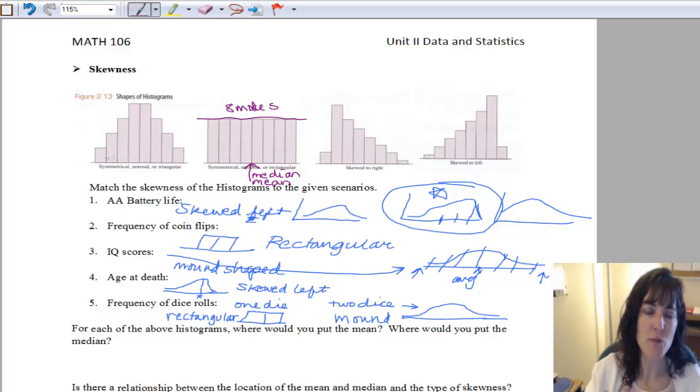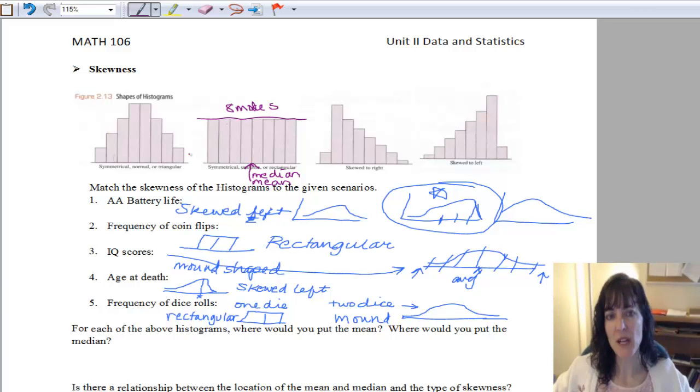Okay, looking at this mound shaped one, the first one, we can see if we're trying to balance, we're right here in the exact middle. Right here in the exact middle is where our median and our mean are, because our mean is the exact center, it's the average of all the values, and we have the exact same many on each side, so we're going to get that exact center for both of those.